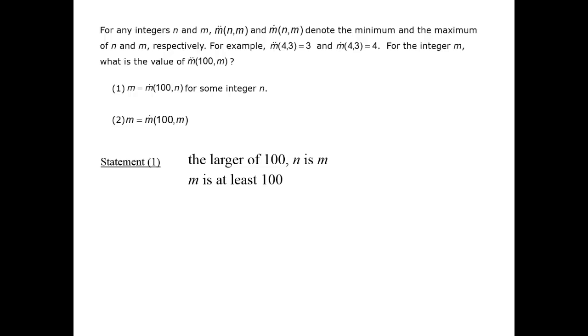Plugging that in to the expression that we need to know about, m2 dot of 100 and m, we now are talking about the minimum number of 100 and a number that is at least 100.